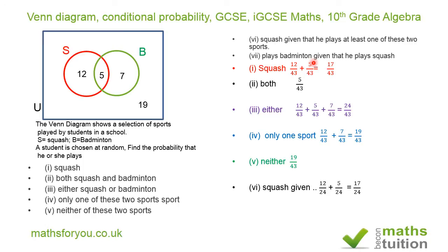For question seven — P(badminton | squash) — our sample space is now just the squash circle (17 students). Within that, only the 5 who play both badminton and squash count. So the answer is 5/17. Hopefully that all makes sense — please subscribe, thank you for watching!